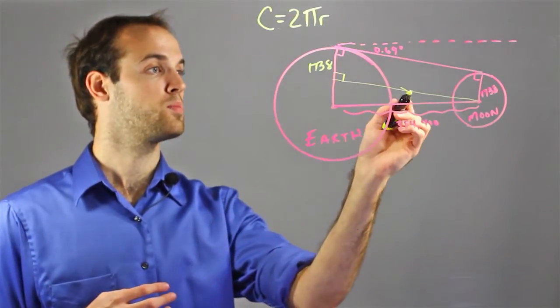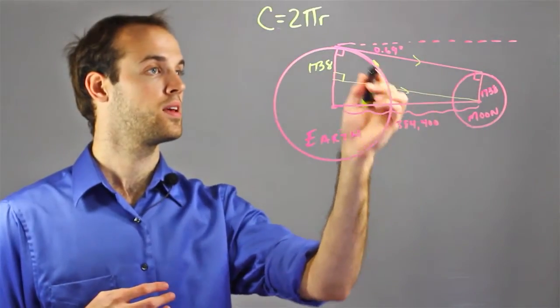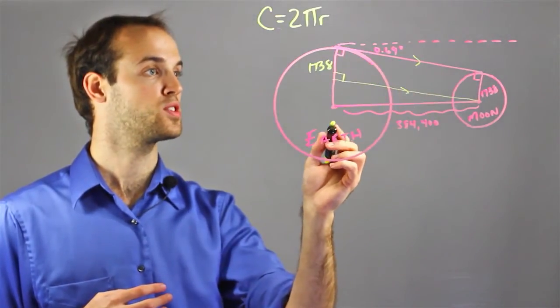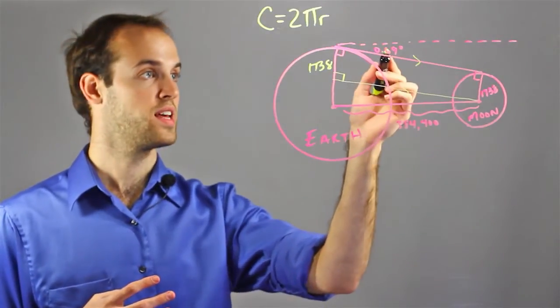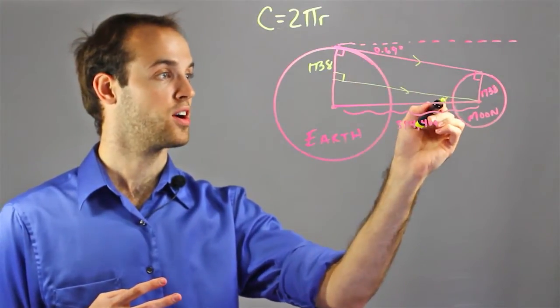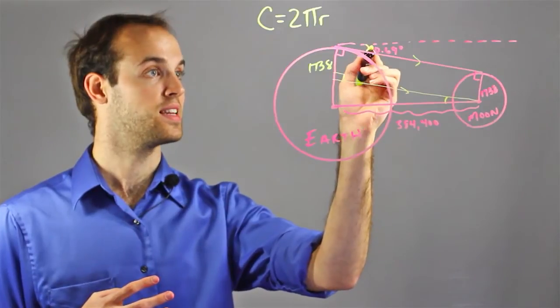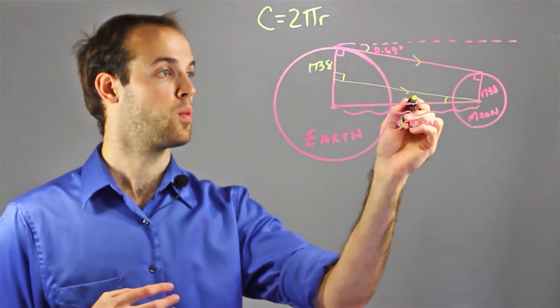And since these two lines must be parallel, and they're cut by this transversal, I know that, because of alternate interior angles, that this angle right here must be the same as this angle. So it's 0.69.